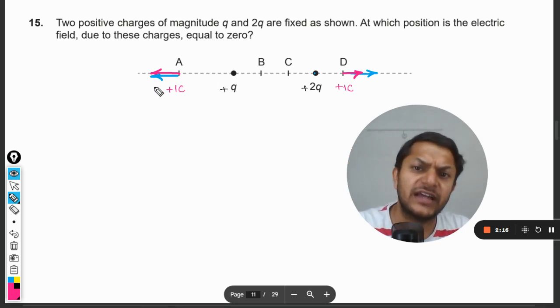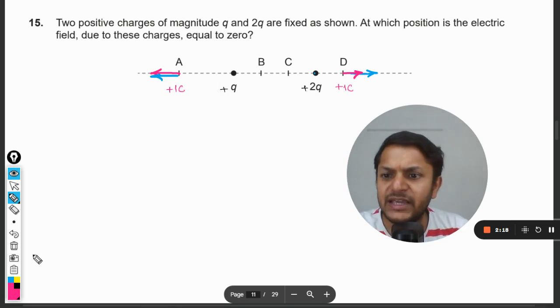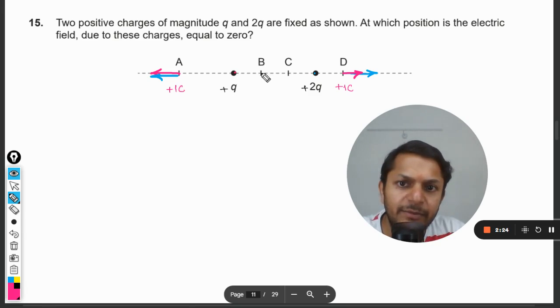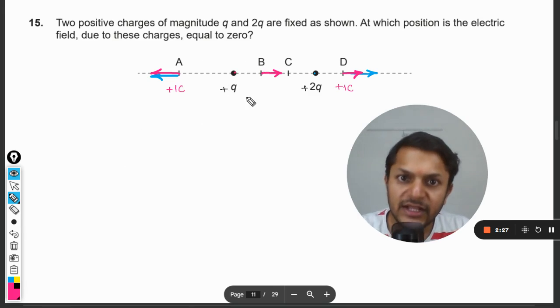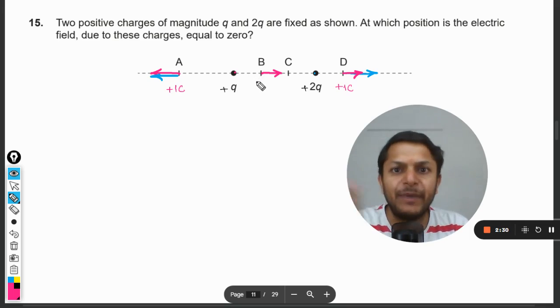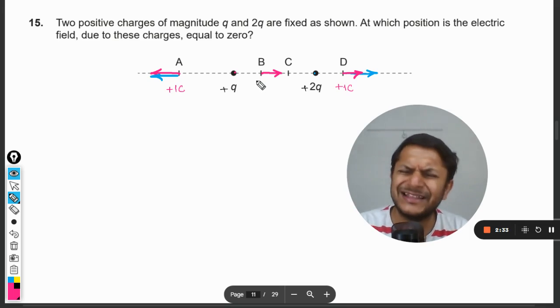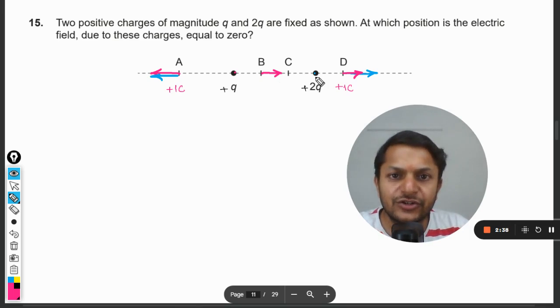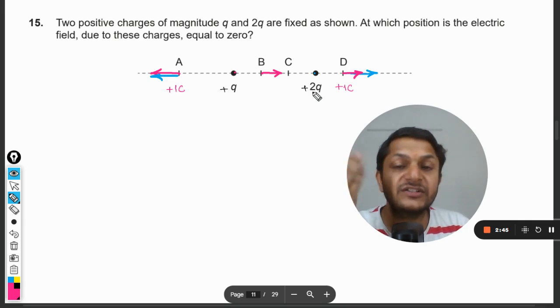Let us now concentrate at B and C. This q will be repelling B with some force, and this 2q will be again repelling the point. The direction of the electric field is away from the positive charge. The distance is large so the value of the force will be lesser, but the charge is more, like it is double.